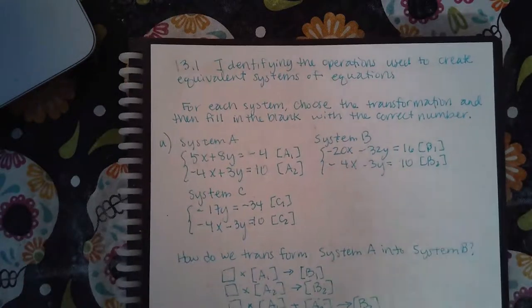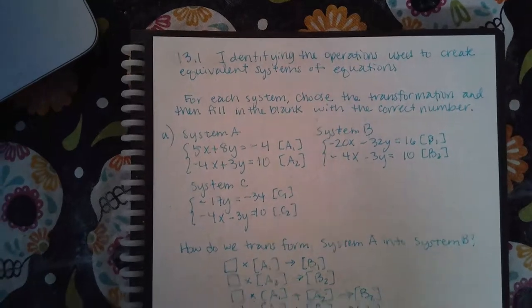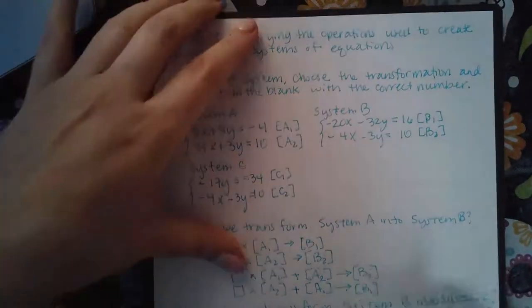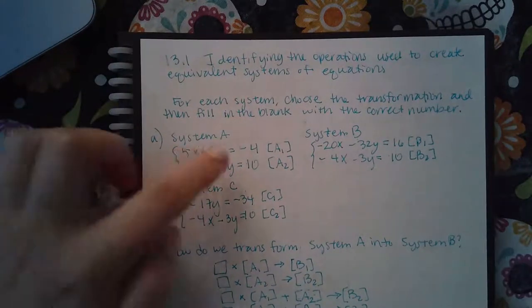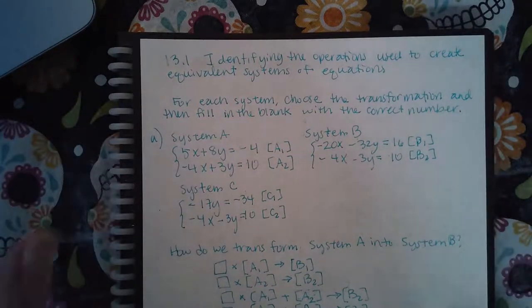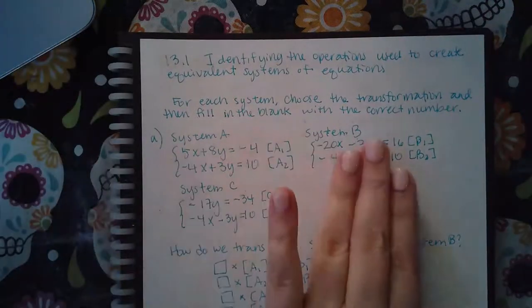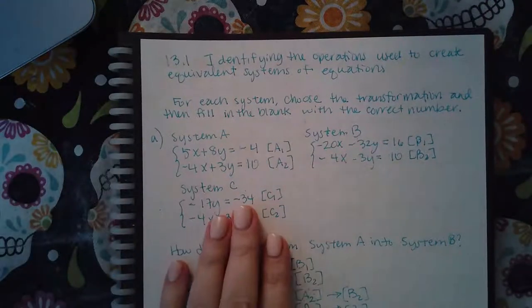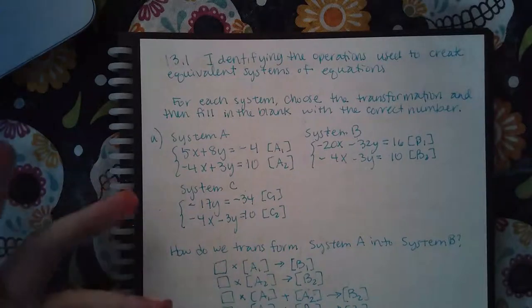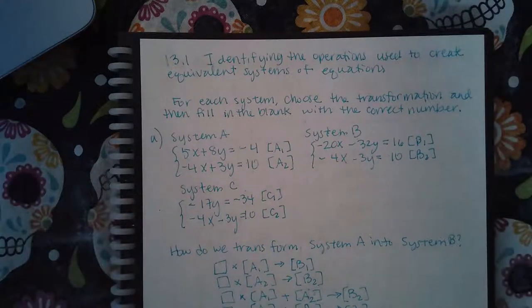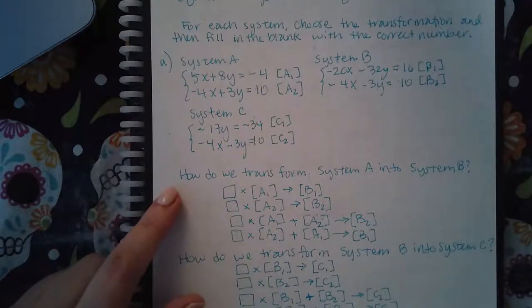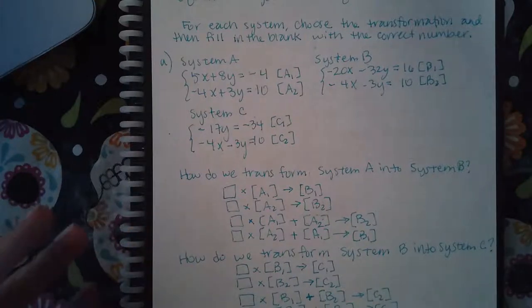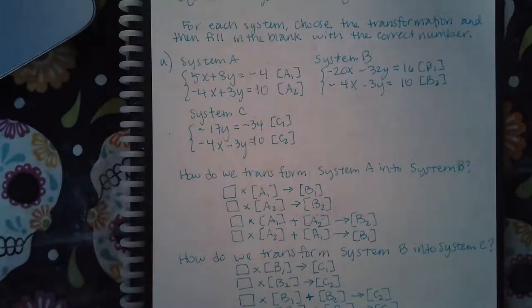Here we have 13.1, which is 'Identify the operations to create equivalent systems.' We have a system of equations with two equations and two variables, and they've gone from system A to system B to system C. We want to figure out what happened to each system. The first question asks: how do we transform system A into system B?